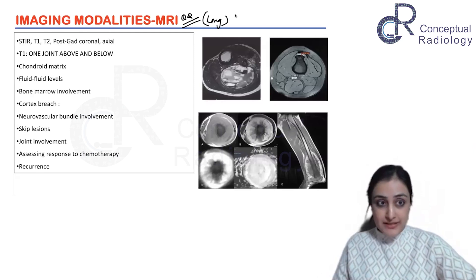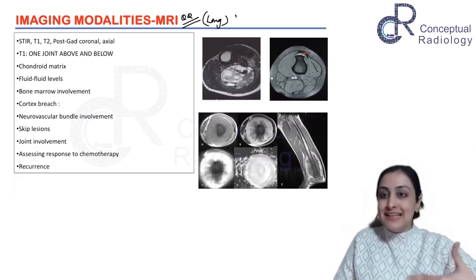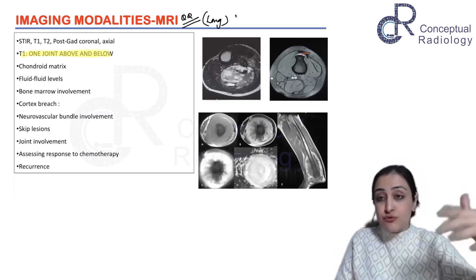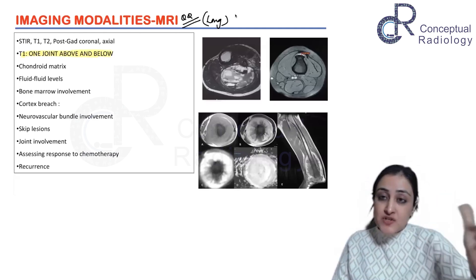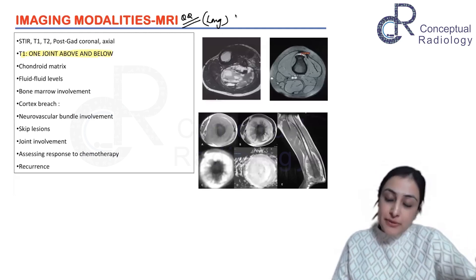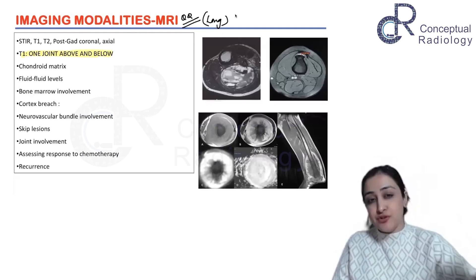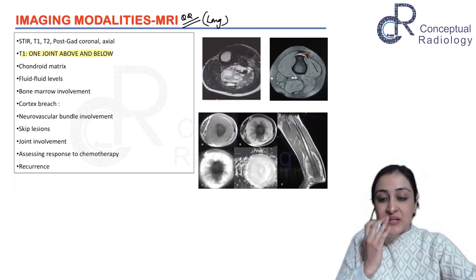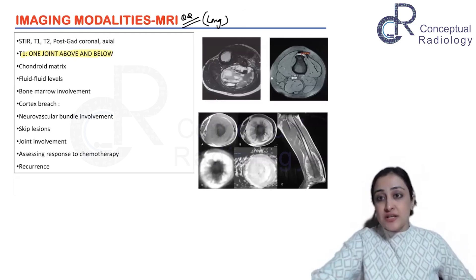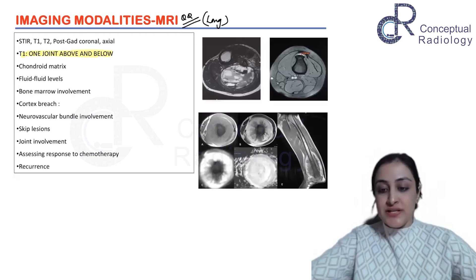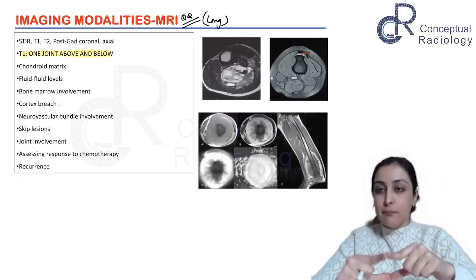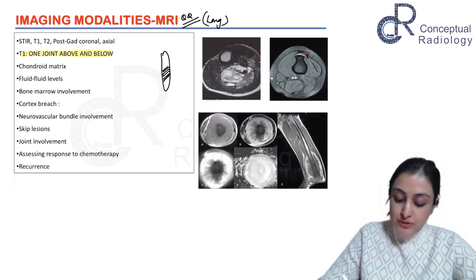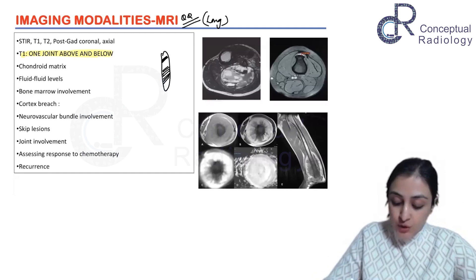On T1, a whole-bone scan is taken, including one joint above and below. The purpose is to look for skip lesions. The difference between a skip lesion and a bony metastasis is a commonly asked question: skip lesions are within the same bone — non-contiguous lesions within the same bone — whereas if the lesion crosses the joint, it becomes a distant metastasis.